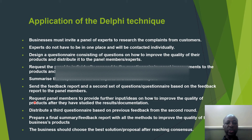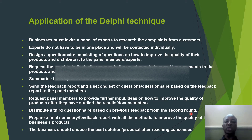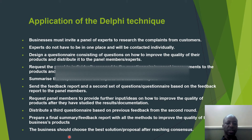You can request panel members to provide further input or ideas on how to improve the quality of the products after they have studied the results and the documentation. You can further distribute a third questionnaire based on previous feedback. For the second round, if you did not get the right solution you can repeat and resend again. Then prepare a final summary feedback report with all methods to improve the quality of the products of your business.